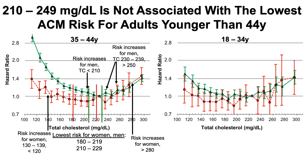In the youngest age group, starting with the women aged 18 to 34, the lowest risk of death for all causes was seen at cholesterol levels of 160 to 200. Notably, there was no significant increase in all-cause mortality risk for values lower than 160. So lower cholesterol in women aged 18 to 34 was not associated with increased risk of death for all causes — in contrast to all the other age groups. Very high values, greater than 280, were associated with higher risk for 18 to 34-year-old women.